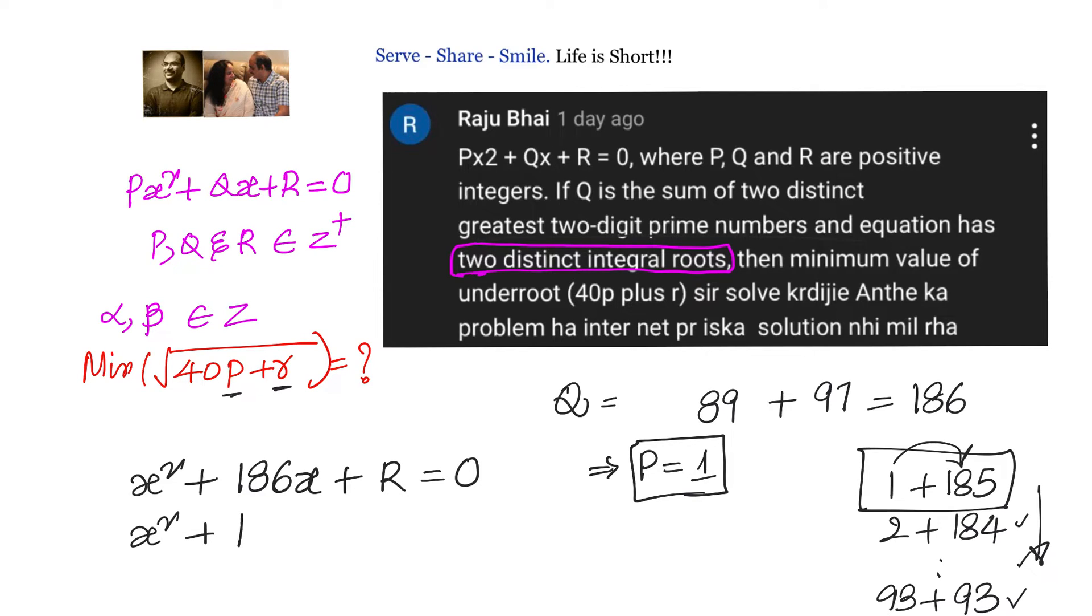The minimum value will happen when you have small values for p and r. That happens only when you take them as 1 and 185. So it will be x² + 186x + 185 = 0. Now suppose instead of that if I take 2 and 184, then r will be 368. If I take 3 and 182, then r will be 546. That means we are adding a bigger value here, so we need to add a smaller value. I have to look for the options where the sum is 186 and the product is minimum. The product is minimum satisfying sum is 186 happens when alpha, beta are 1 and 185.